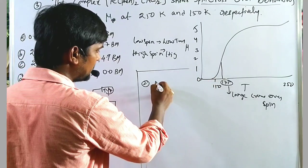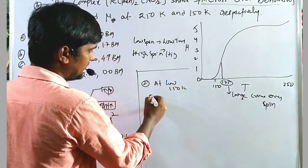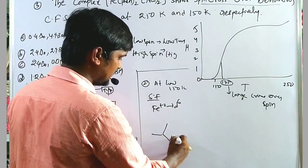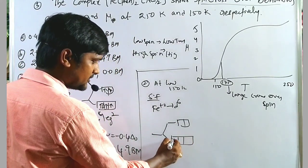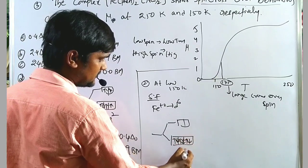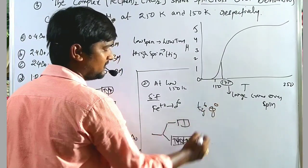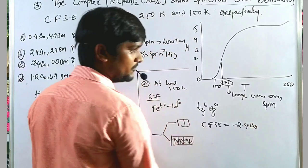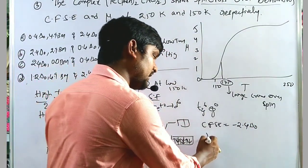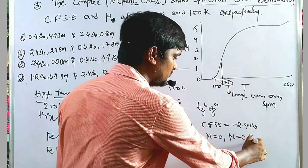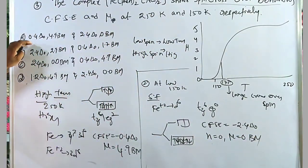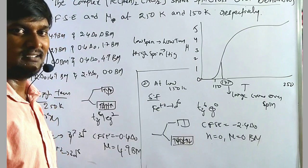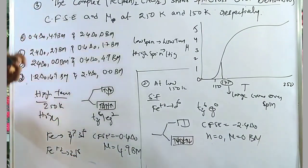In the second case, at low temperature (150 K), it acts as a strong field ligand. So iron Fe²⁺ d⁶ electrons all pair up at the T₂g level, giving T₂g⁶ eg⁰. The CFSE value equals minus 2.4 ΔO. There are no unpaired electrons (n = 0), so the magnetic moment is 0 Bohr magneton. At higher temperature: 0.4 ΔO and 4.9 BM; at lower temperature: 2.4 ΔO and 0.0 BM. The first option is correct.